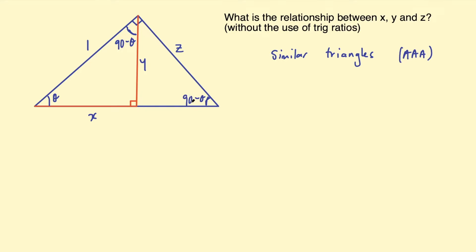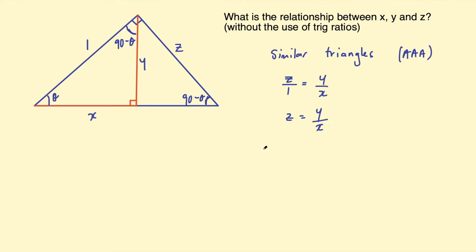This is adjacent to this angle 90 take theta, the same as y is adjacent to 90 take theta in the smaller right angle triangle. So z and y will be related. This ratio z over 1 will be the same as the ratio y over x because they are similar triangles. Z over 1 we could just write as z, so z equals y over x. We have our relationship now: z equals y over x.